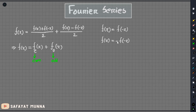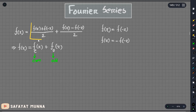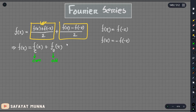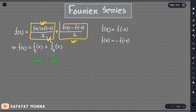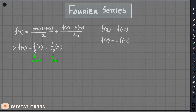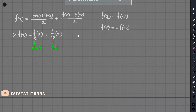The odd function is where f(-x) equals the negative of f(x). If this is a general function, it is neither odd nor even. Odd or even are special cases. This is a general function. Any function can be decomposed into its odd part and even part, where f(x) minus f(-x) divided by 2 is the odd part.